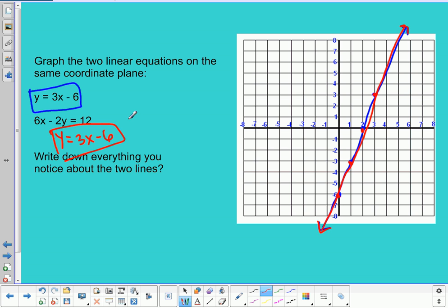So now, here's the graph of these two lines once I put them both in slope-intercept form and then put them on the same coordinate plane. I put the top equation in blue and the bottom equation in red, and you can see that my lines ended up being the same thing. They both had a y-intercept of negative 6, and they both had a slope of positive 3. So when I graphed those two lines, they ended up being the same line, just one right on top of the other.